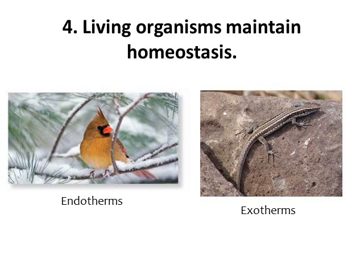The fourth characteristic of life states that living organisms maintain homeostasis — how living things maintain a constant body temperature or constant pH, for example. Some organisms are called endotherms, like birds and humans, which can maintain their internal body temperature by producing their own heat. Other organisms are exotherms — like lizards or snakes — that have to move within their environment to maintain body temperature. A lizard can sun itself on a rock when cold, and retreat to shade when too hot.